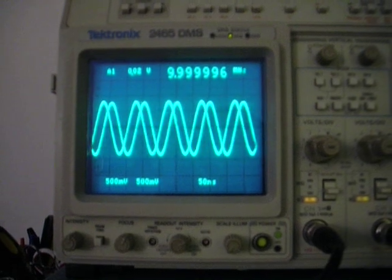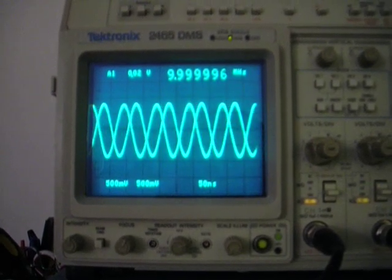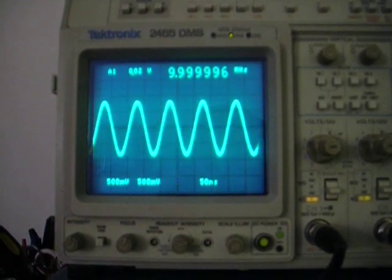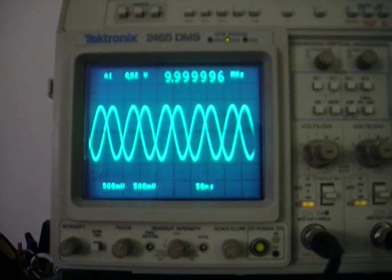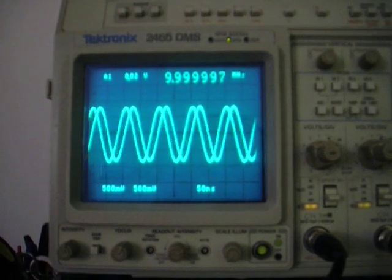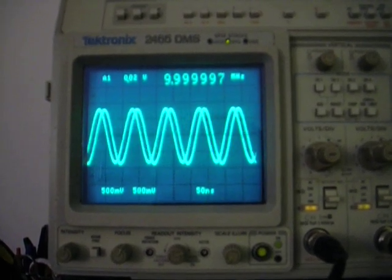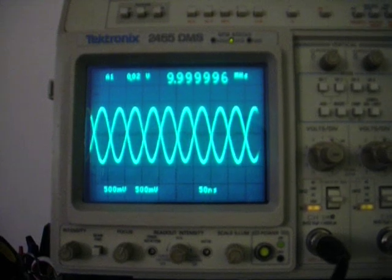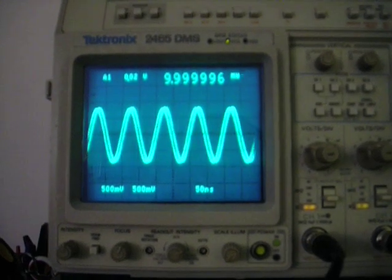And as you can see, that takes about three seconds to happen, which means that assuming the Rubidium Standard is dead on, the Fluke signal generator here is one-third of a Hz off at 10 MHz, which is 30 parts per billion.